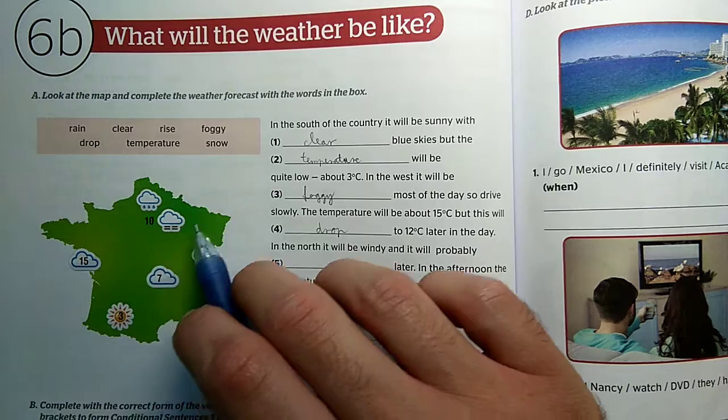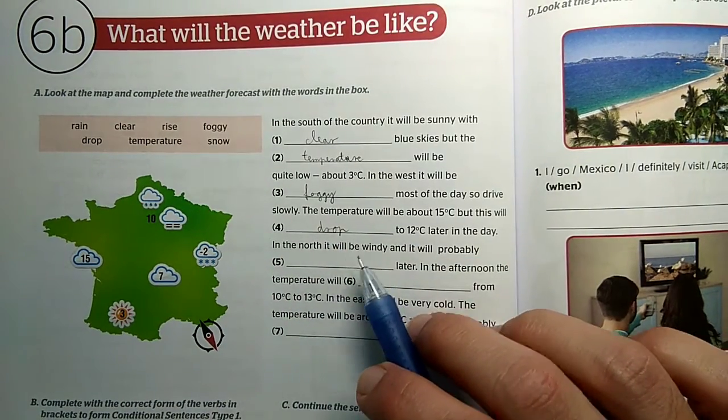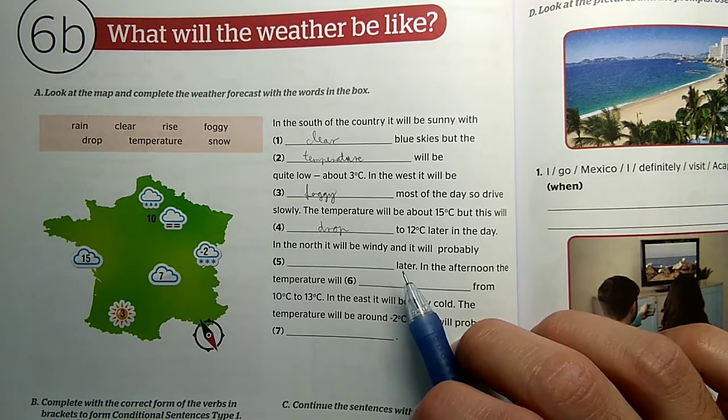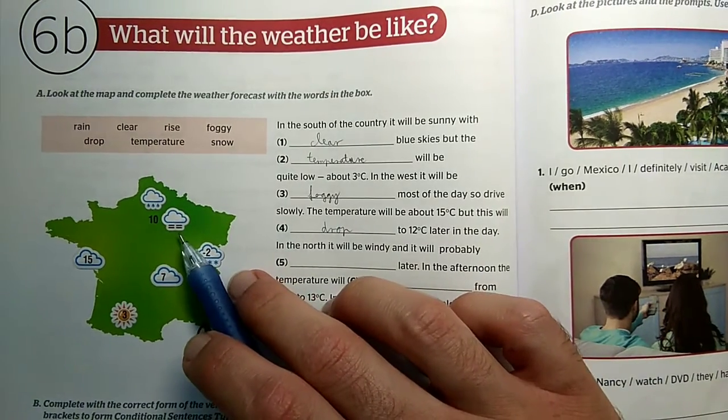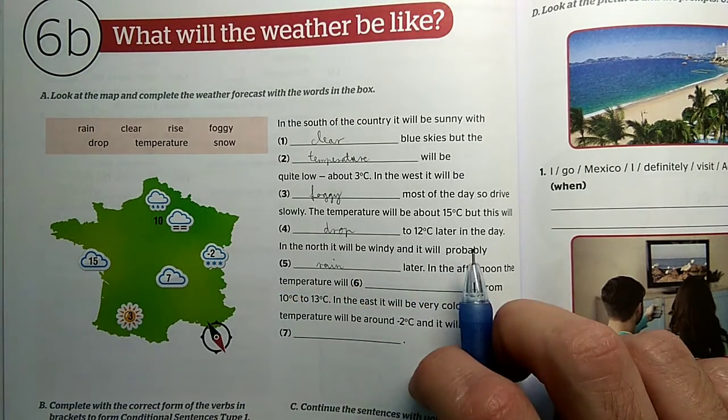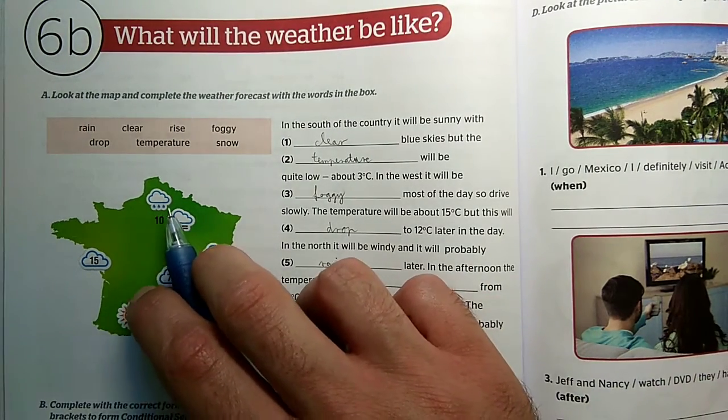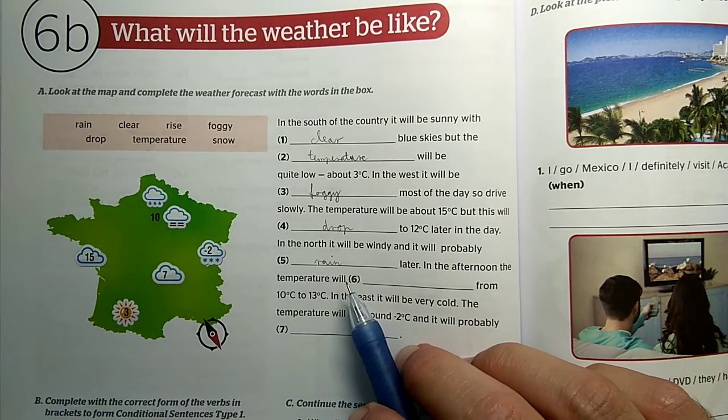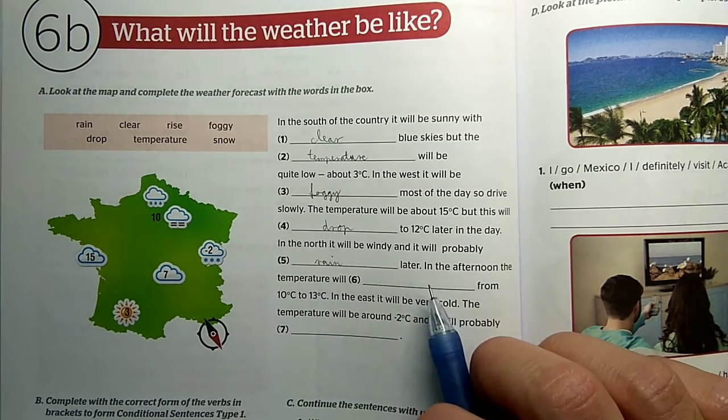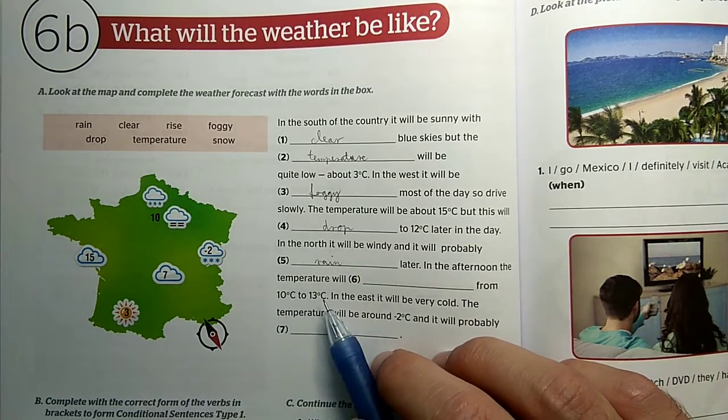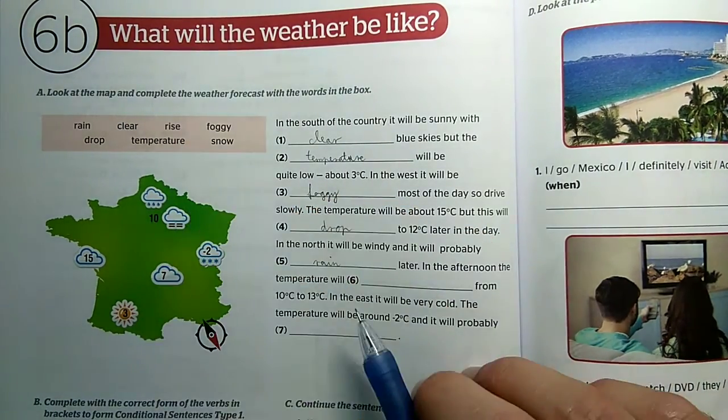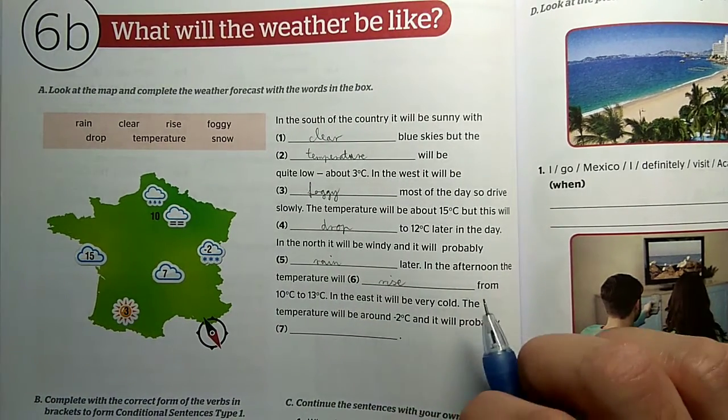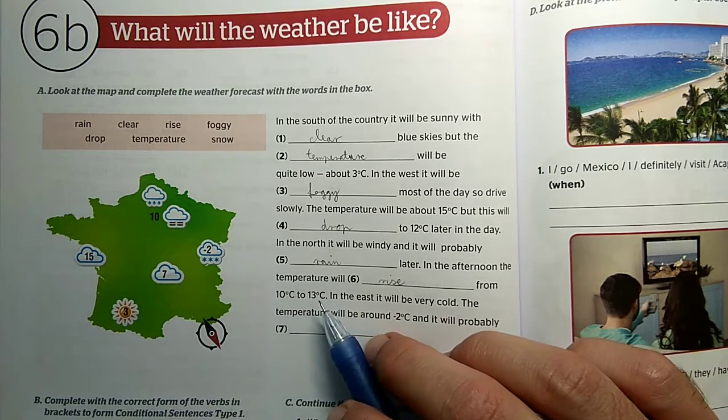In the north, the weather will be windy and it will probably rain later. If we look, it will probably rain later. In the afternoon the temperature will rise from 10 degrees to 13 degrees.